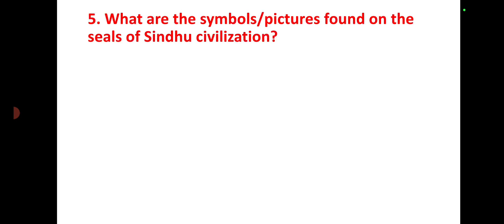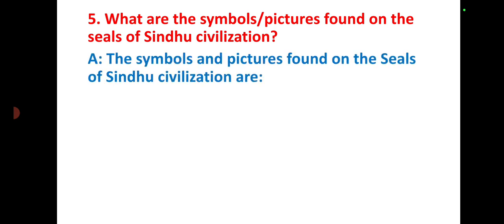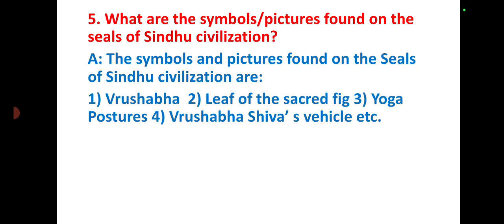What are the symbols and pictures found on the seals of the Sindhu civilization? The symbols and pictures found on the seals of Sindhu civilization are the Rushaba, the leaf of the sacred fig tree, yoga postures, the fortress, and Rushaba — Shiva's vehicle.